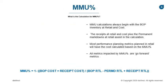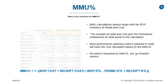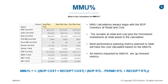The MMU calculation begins with the beginning of period inventory for each period. We then add in our receipt values at both retail and cost, and subtract our permanent markdowns at retail. The calculation for MMU percent is: 1 minus the total of your beginning of period inventory at cost plus your receipts at cost, divided by the total of your beginning of period inventory at retail minus your permanent markdowns at retail plus your receipts at retail.